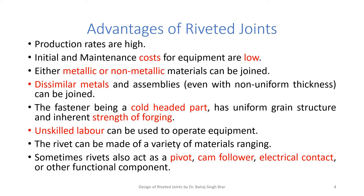Let us discuss the advantages of riveted joints. Production rates are high. Initial and maintenance costs for the equipment are low. Either metallic or non-metallic materials can be joined. Dissimilar metals and assemblies, even with non-uniform thickness of plates, can be joined. The fastener, being a cold-headed part, has uniform grain structure and has the inherent strength of forging. Unskilled labor can be used. The rivet can be made of a variety of materials ranging from soft steel to monel or inconel metals. Sometimes rivets also act as a pivot, cam follower, electrical contact, or other functional component.